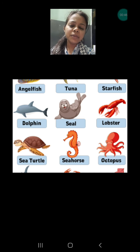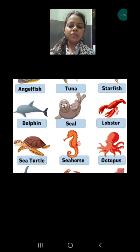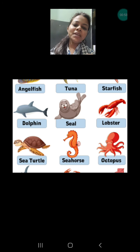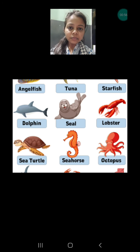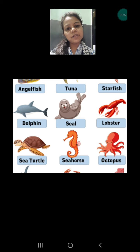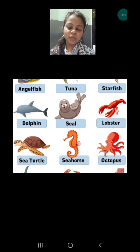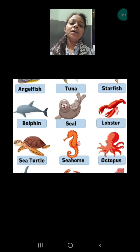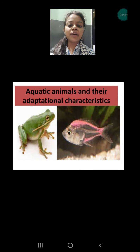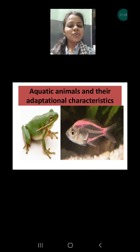A lot of examples are seahorse, octopus, seal, fish, turtle, and so on. So how do these animals survive under the water, and why can land animals not survive under the water? What are the special features found in aquatic animals that allow them to comfortably live under the water? We are going to discuss that adaptation.